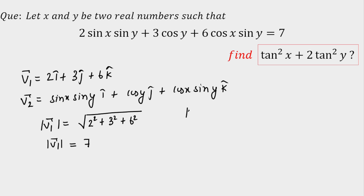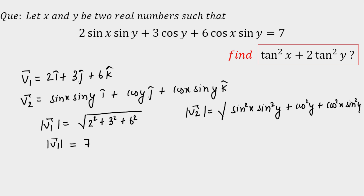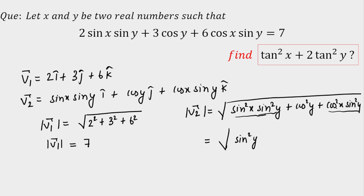Similarly, I am going to calculate |v2|. The magnitude of v2 will be √(sin²(x)·sin²(y) + cos²(y) + cos²(x)·sin²(y)). From the first and last terms, I take sin²(y) common, leaving sin²(x) + cos²(x) = 1 inside the bracket. The remaining term is cos²(y). So we get √(sin²(y) + cos²(y)) = √1 = 1. Therefore |v2| = 1.